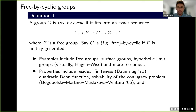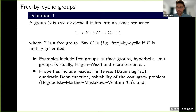Some examples: all free groups are free bicyclic, because taking any map to ℤ, the kernel is going to be free. Similarly for surface groups, and more generally, a hyperbolic limit group is also virtually free bicyclic — this result is due to Hagen and Wise. Later in this talk I will show that there are many other groups which are actually virtually free bicyclic.